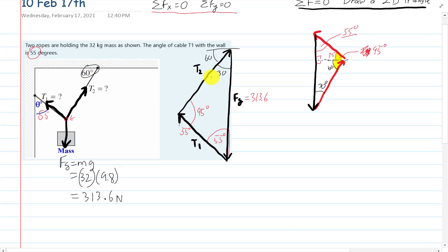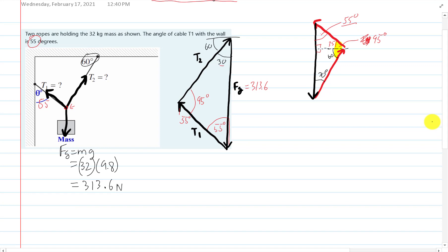So if we have this triangle with the angles labeled out, it becomes very quick. It's the sine of, well we have this side and 95, so the sine of 95 all over 313.6.